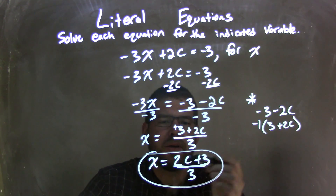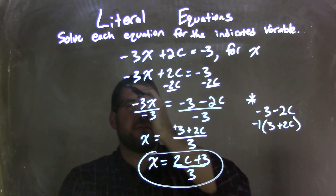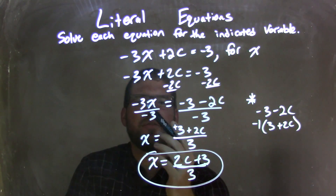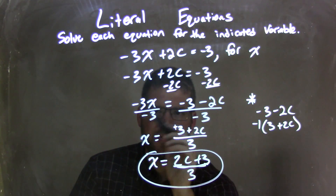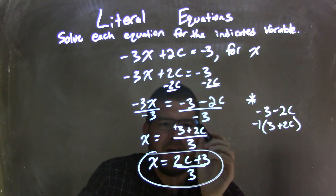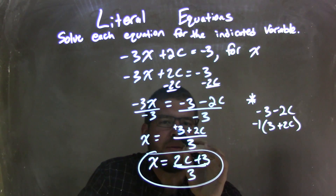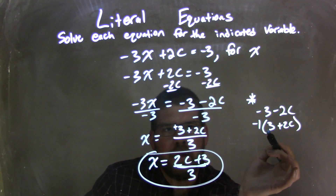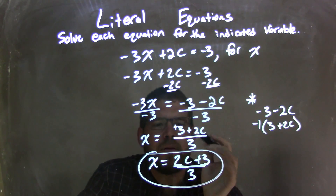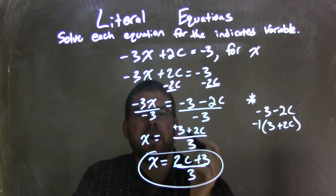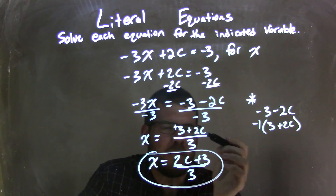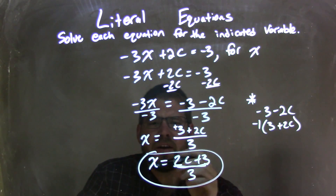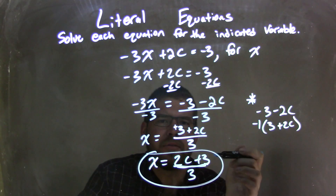Let's recap. We're given negative 3x plus 2c equals negative 3, and we need to solve for x. I rewrote the equation, then subtracted 2c from both sides, leaving negative 3x on the left equals negative 3 minus 2c on the right. Then I divided by negative 3 — leaving the 3 in the denominator and distributing the negative, which cancels to make both terms positive: positive 3 and positive 2c. You can also factor out a negative 1 to eliminate the negatives. Then I rearranged using the commutative property to have 2c come first. My final answer is x equals 2c plus 3 all over 3.